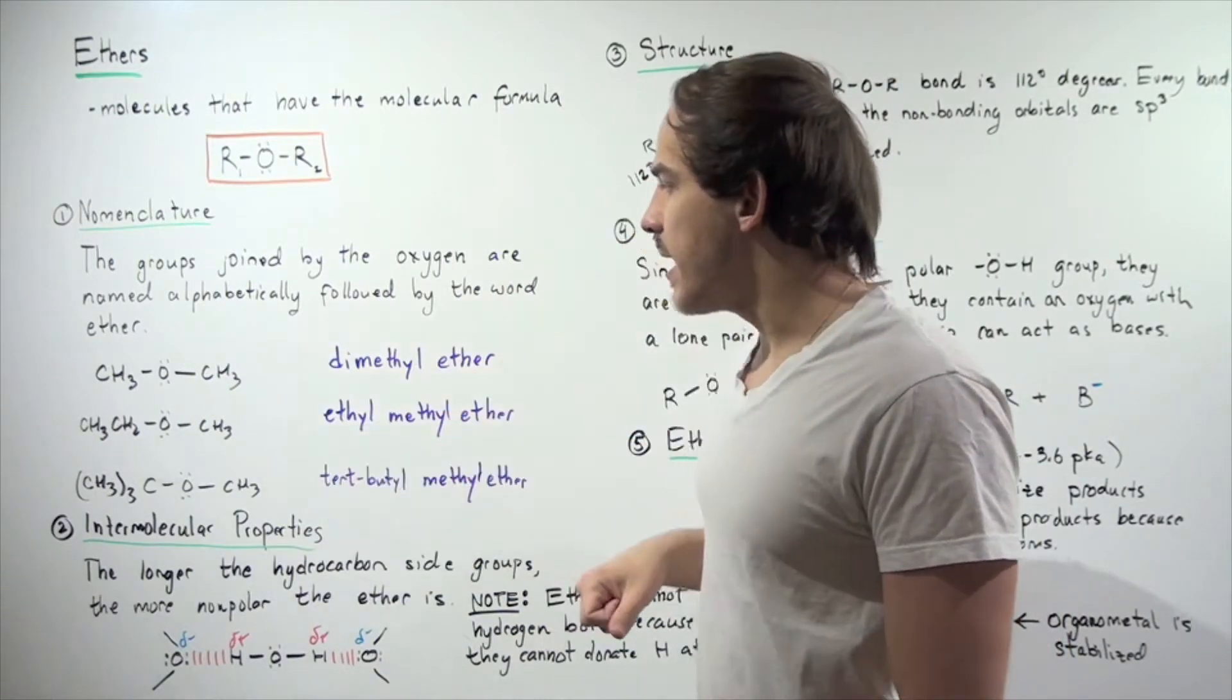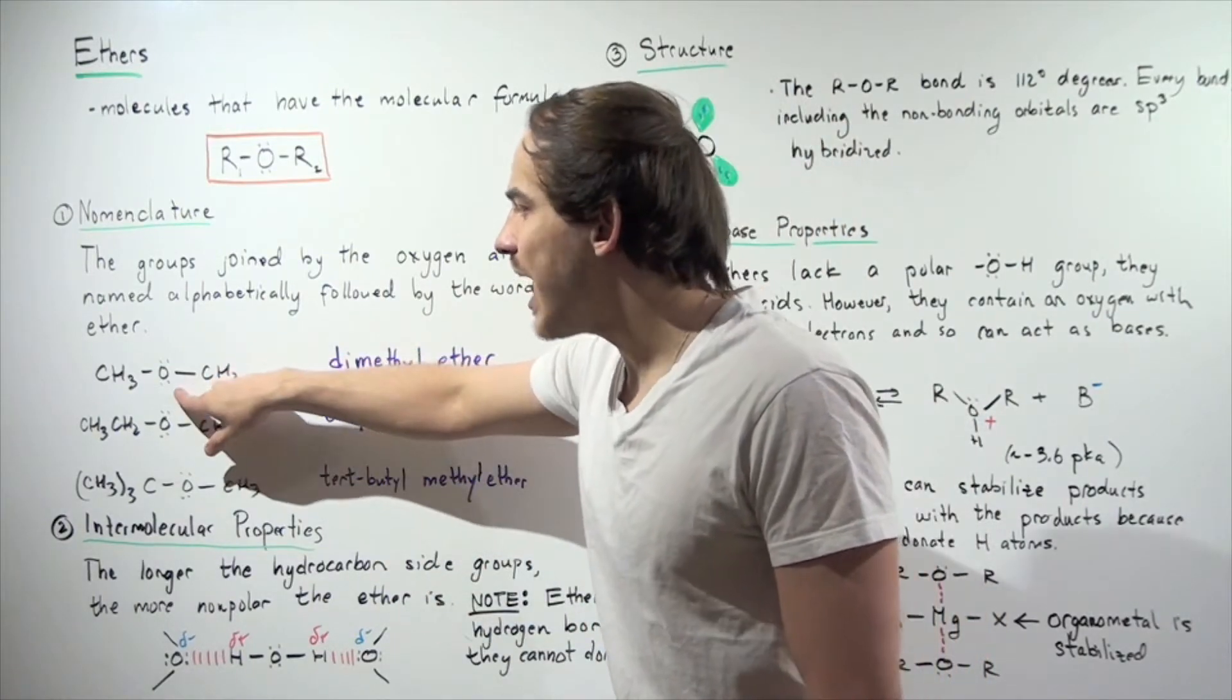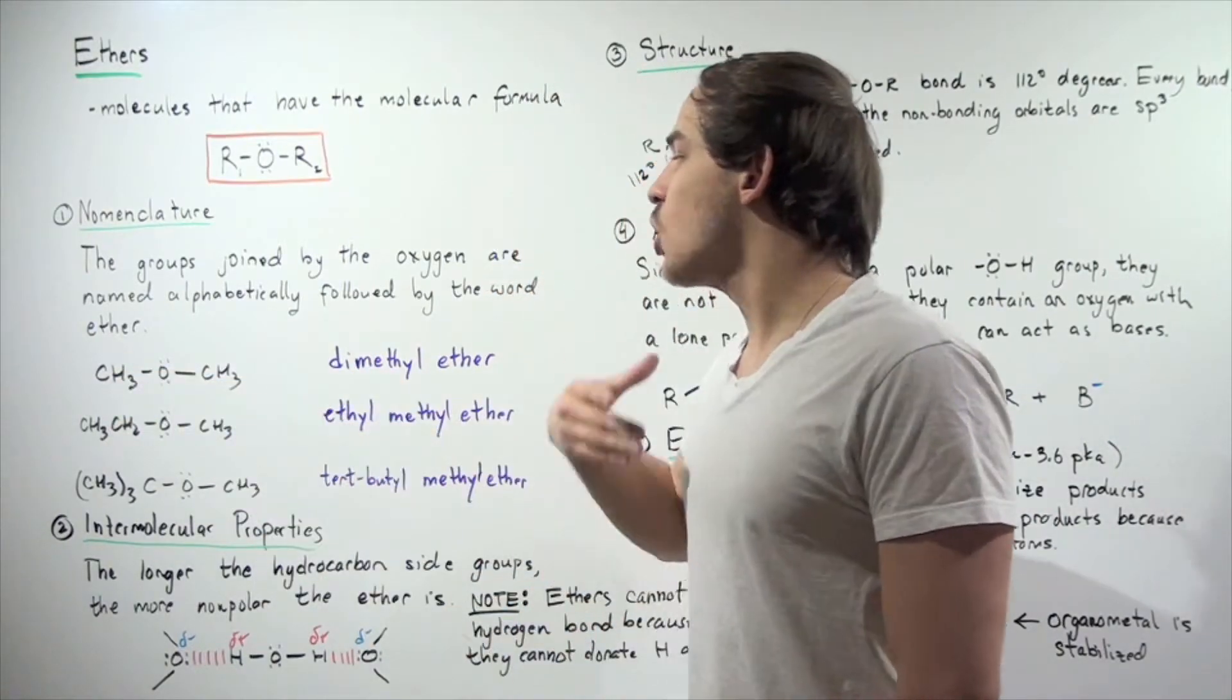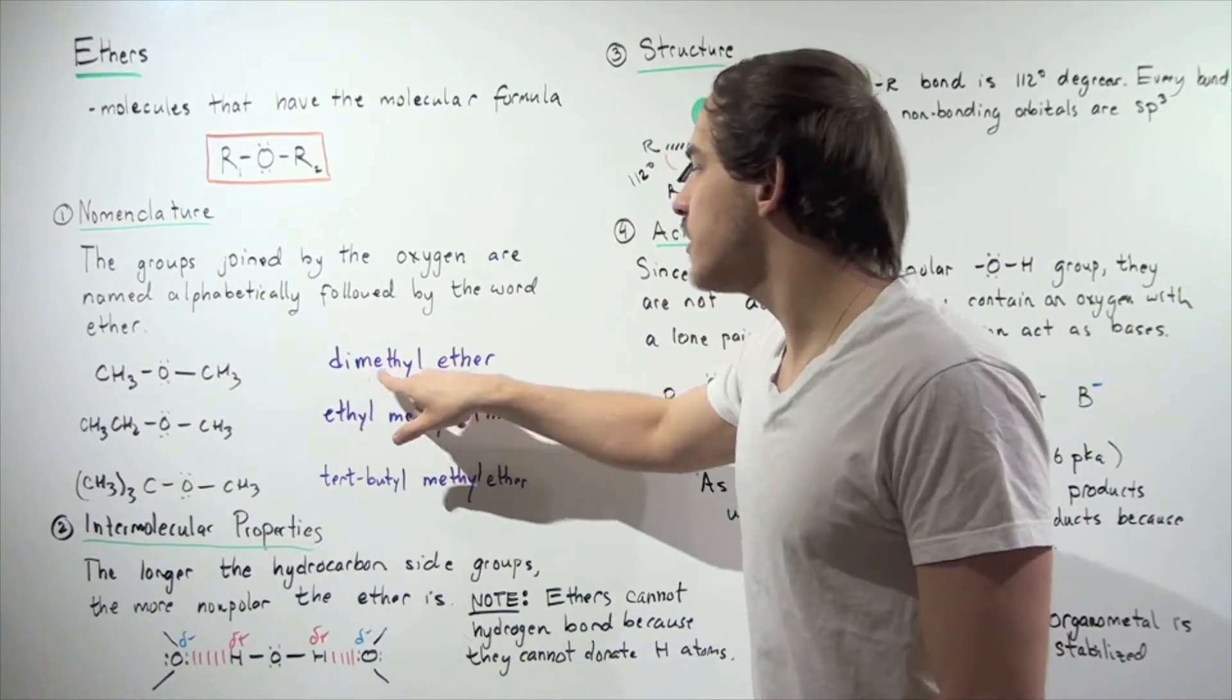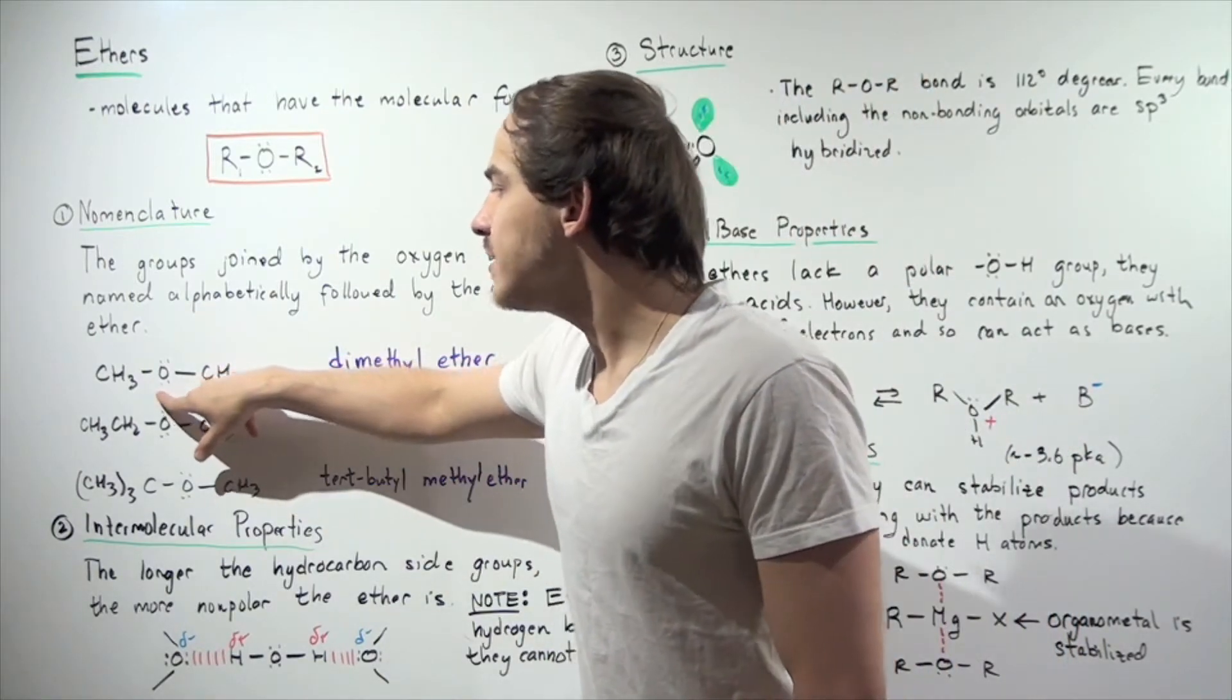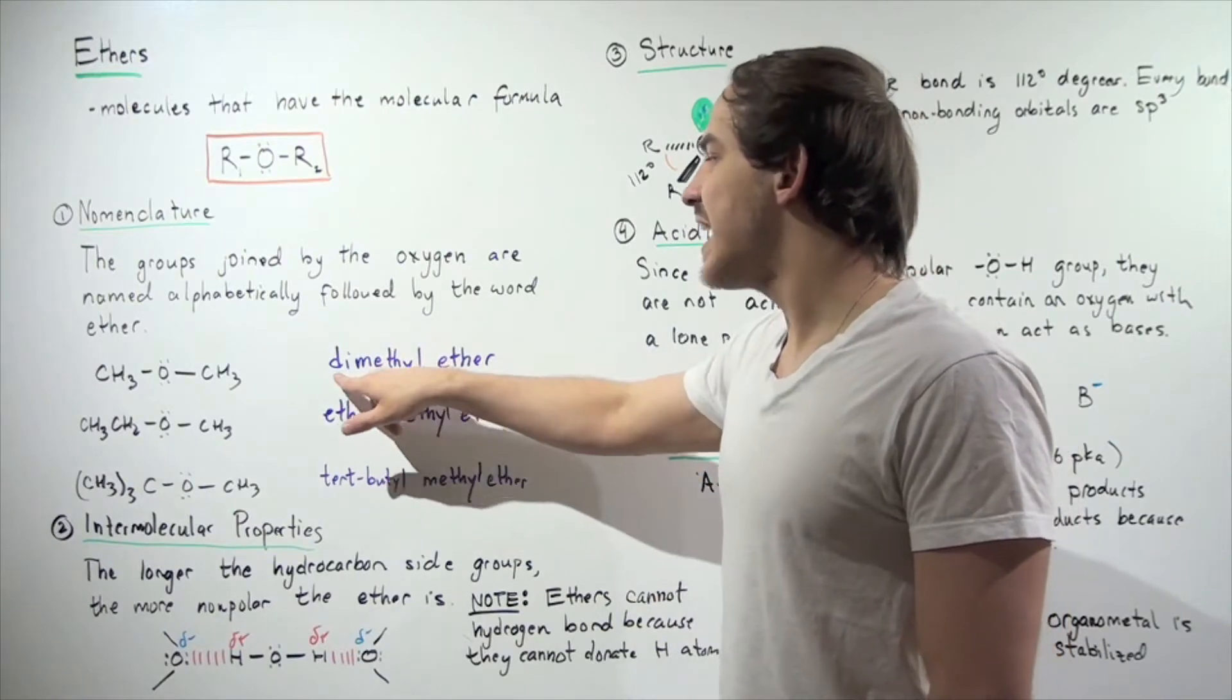let's look at three compounds. Compound one has a central oxygen with two of the same R groups, two methyl groups. So we name it dimethyl ether. The name simply means we have a central oxygen attached to two methyl groups.